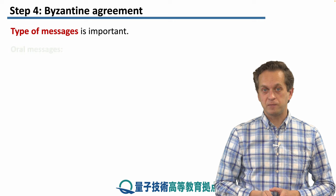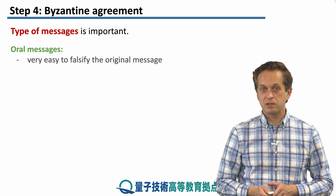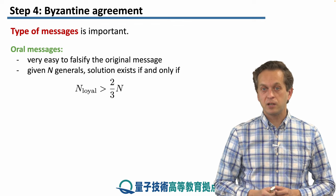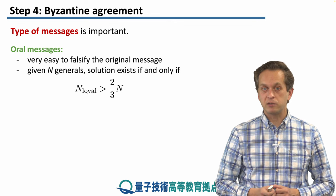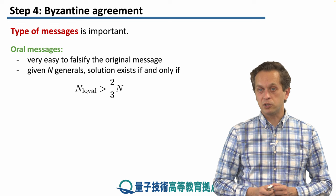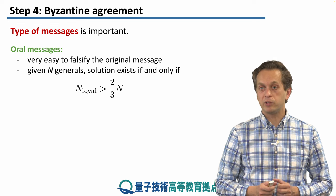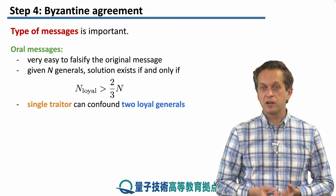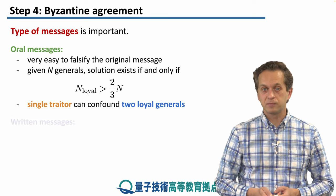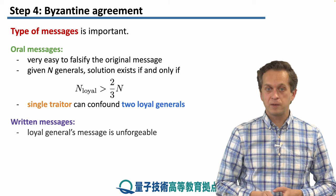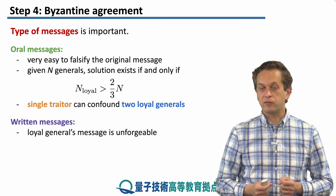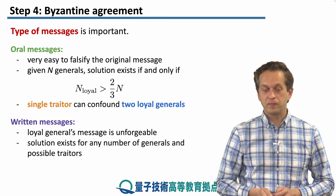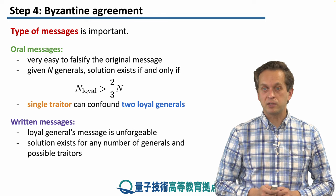Also important is the type of messages. Oral messages are very easily falsifiable. For this situation, Lamport and collaborators presented a solution where the number of loyal generals had to be larger than two-thirds of the total number of generals — for example, a single traitor was able to confound two loyal generals. For written messages, loyal generals' messages are unforgeable; we assume the message cannot be falsified. The solution exists for any number of generals and possible traitors.